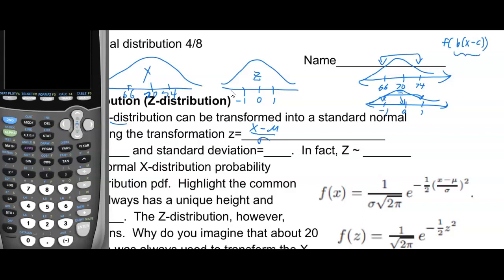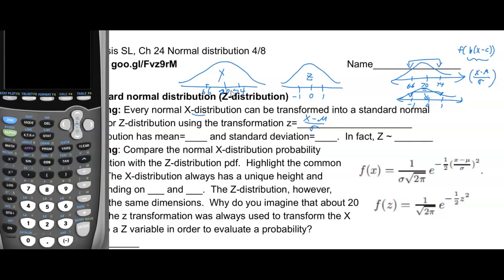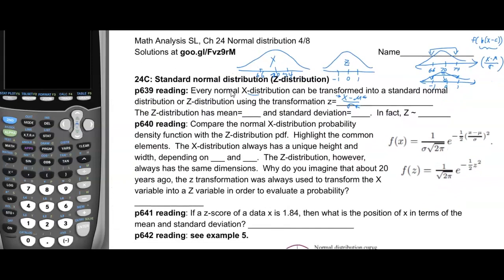This is similar to horizontal compression and horizontal translation from the transformations chapter. Instead of subtracting c we subtract mu for the horizontal translation, and instead of multiplying by b we divide by sigma for the horizontal compression. So the z-transformation takes our x-value, subtracts mu to center it at zero, then compresses horizontally by a factor of sigma.